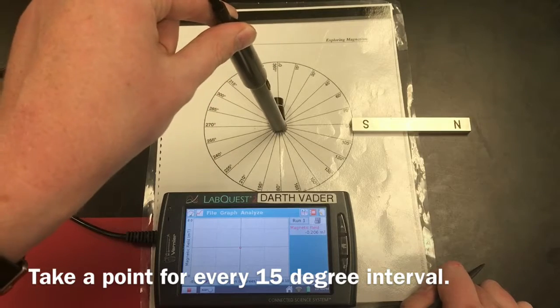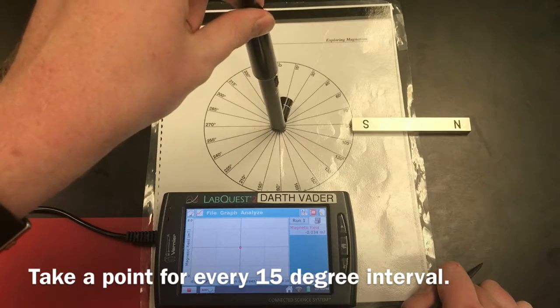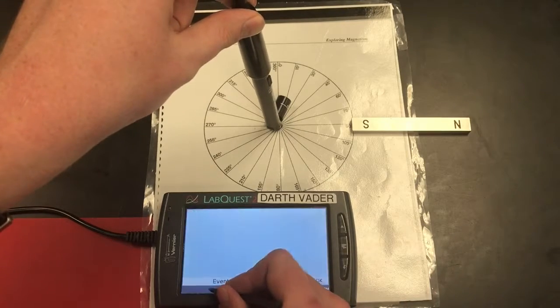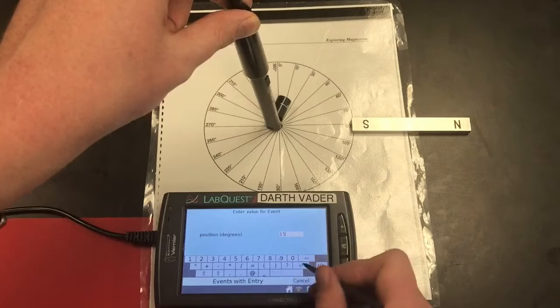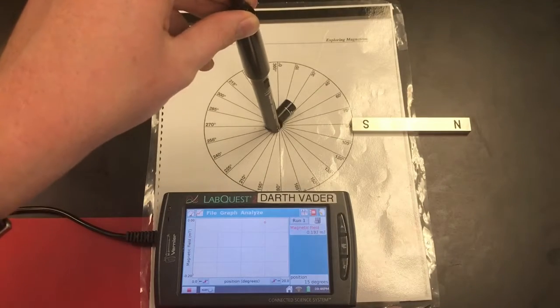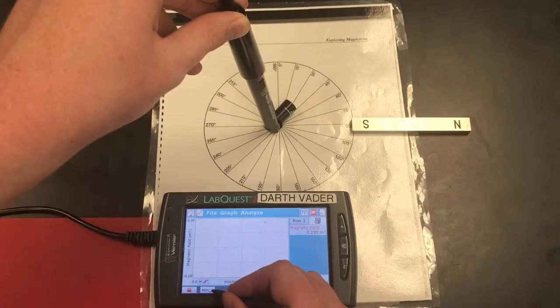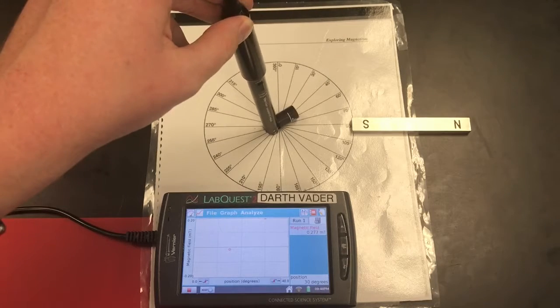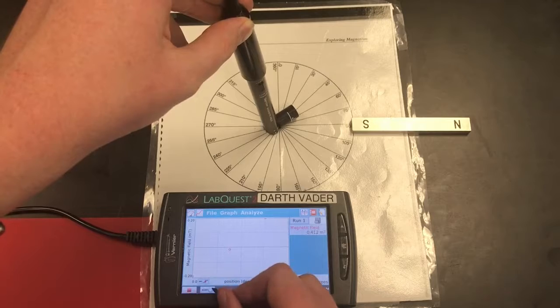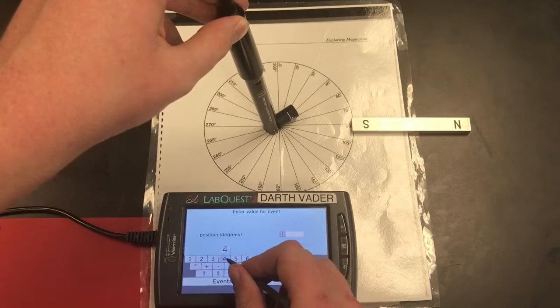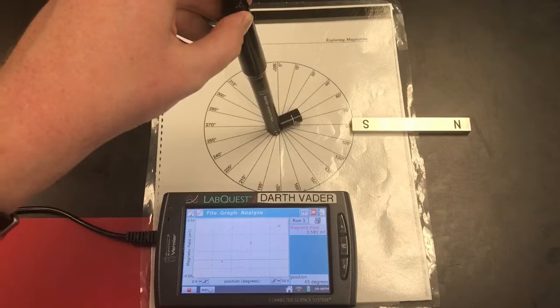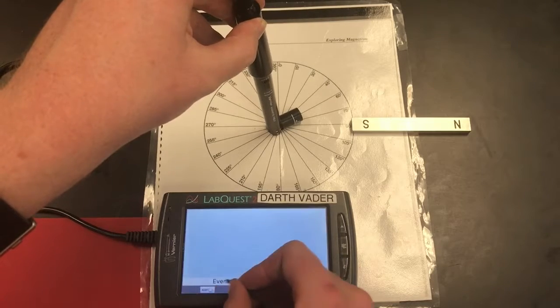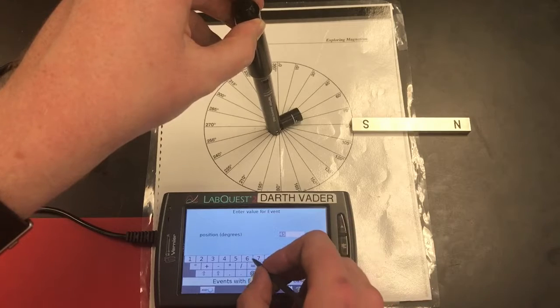You're going to label your position. So we're at zero degrees. We're going to repeat this all the way around. I'm going to move it to 15 degrees, 30 degrees, 45 degrees, and so on. We're just going to keep moving it around hitting keep and punching in where we are degrees-wise. 60 degrees.